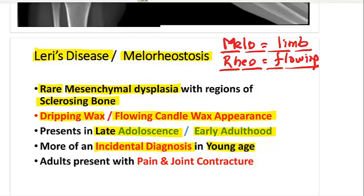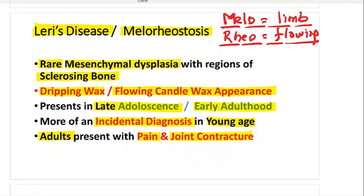If melorheostosis is diagnosed in an adult, they are usually presenting with pain and joint contracture due to sclerosis of the bone in and around the joint.